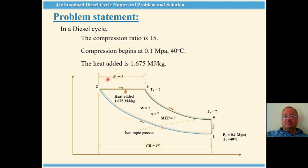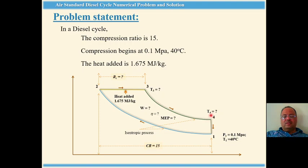We have to find out the cutoff ratio V3 upon V2, the maximum temperature T3 of the cycle — which is when heat addition is completed — and also T4, the temperature after the expansion process. Additionally, we need to find work done, efficiency, and mean effective pressure.